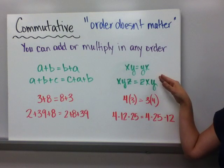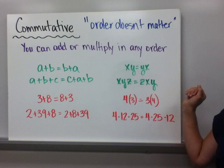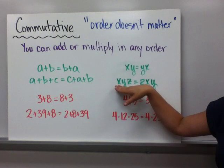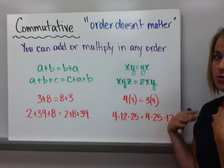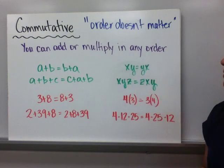This also applies in multiplying. X times Y is equal to Y times X. Or XYZ is equal to ZXY. And you should know that when all those letters are just smushed together, there's no symbol in between there, it's meaning multiply.